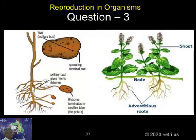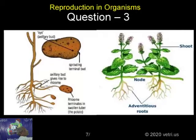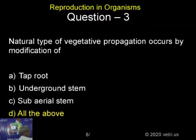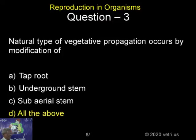Reproduction takes place in the underground stem — for example, potato — and adventitious roots also give rise to vegetative propagation. So all of the above is the correct answer.